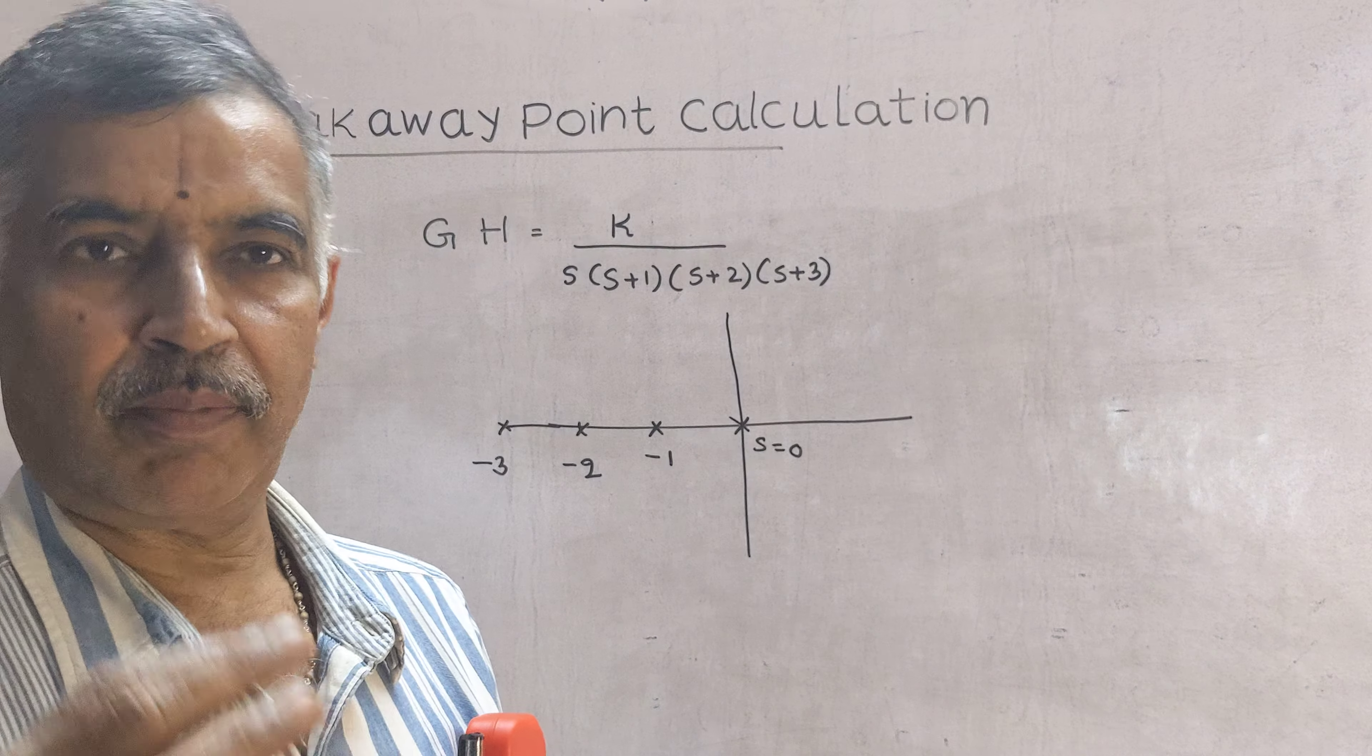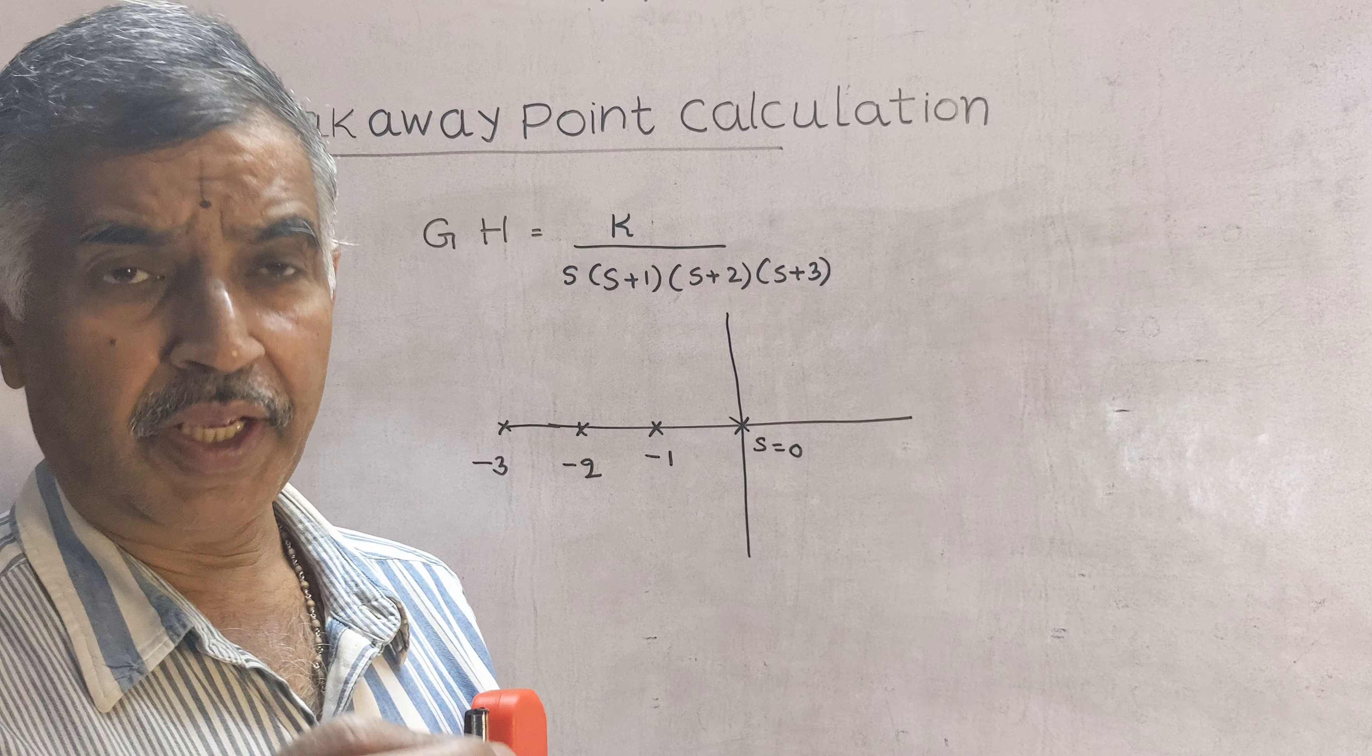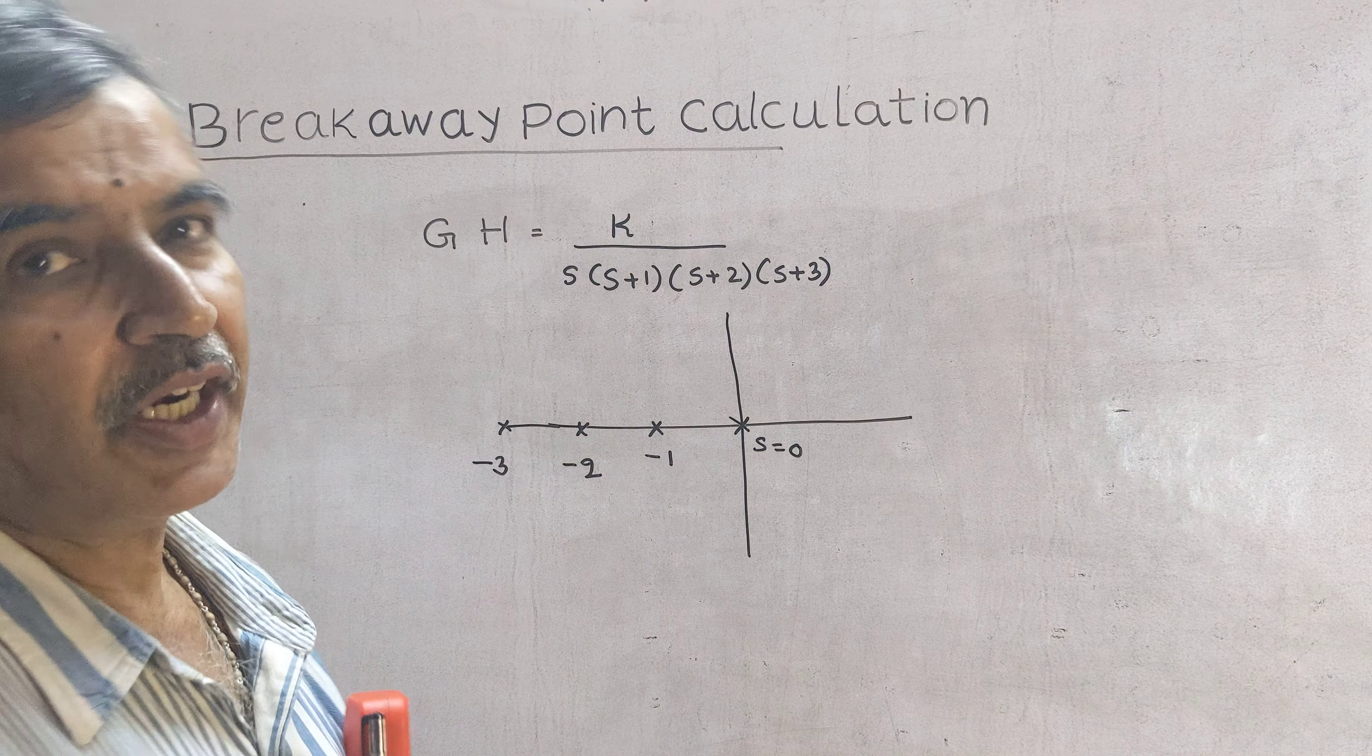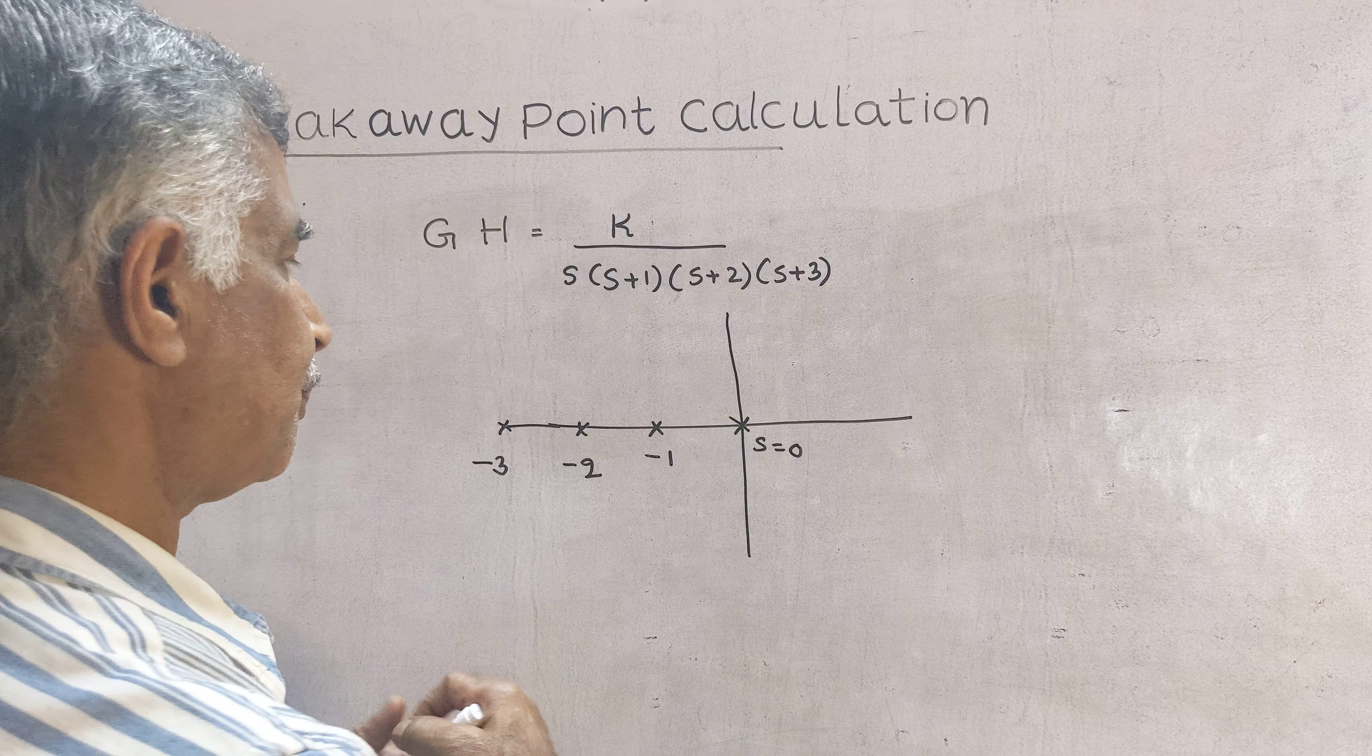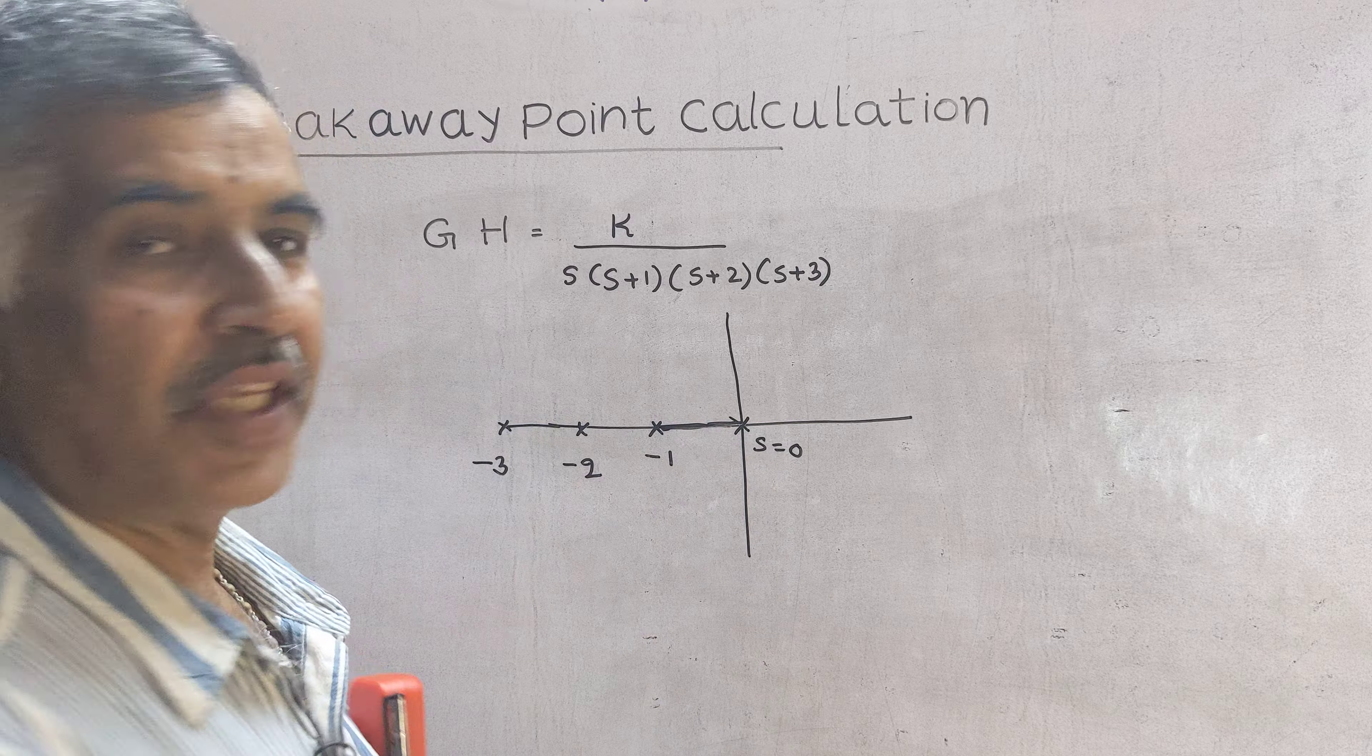Now first you confirm which portion of the real axis will contain root locus. Between these two points definitely there will be root locus because for these points to their right the number of poles is 1. Therefore there will be root locus.